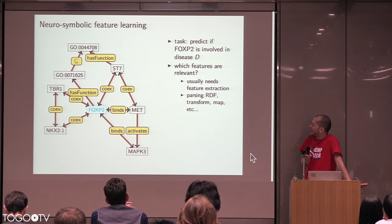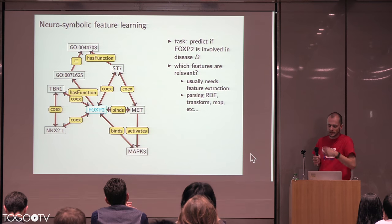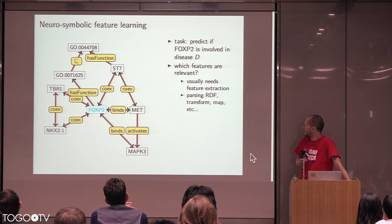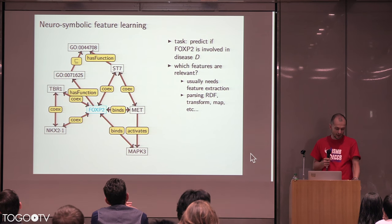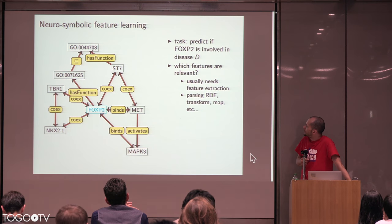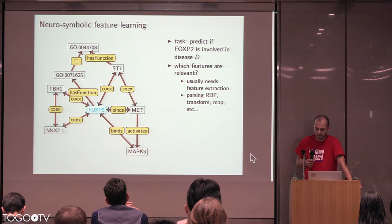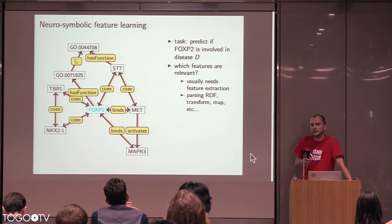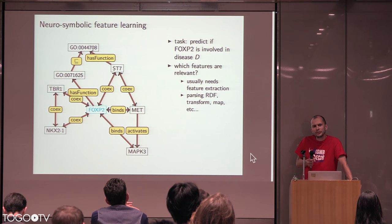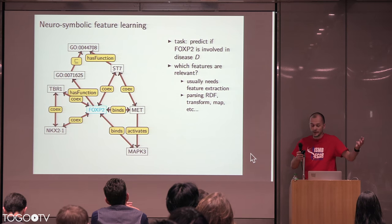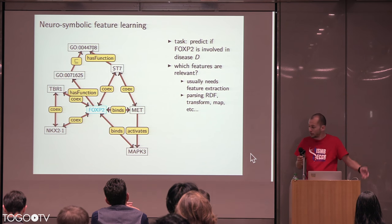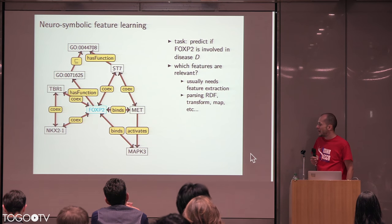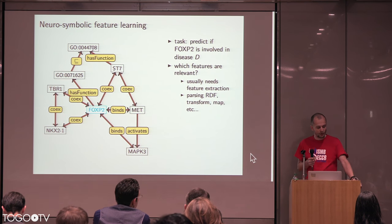Let's outline the problem. This is part of a graph — it can be an RDF graph, integrated across multiple endpoints or stores. What would we need if we wanted to predict something new about, say, FOXP2? If we want to build a machine learning model for this, the first question would be: which features are actually relevant? When we try to find which features are relevant — say, is FOXP2 involved in some disease — we start extracting features. And extracting features is something that a lot of people do by hand.